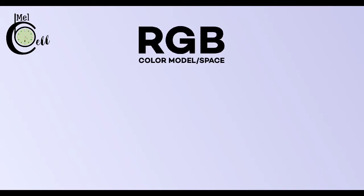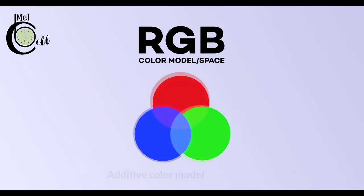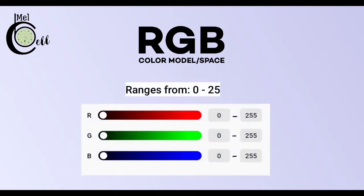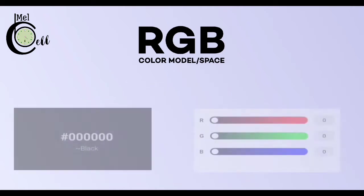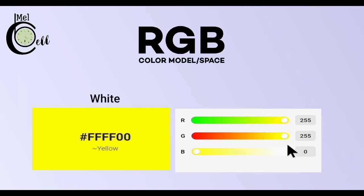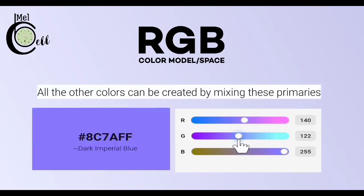RGB stands for Red, Green, and Blue. It's an additive color model, as mixed primaries make white. The intensity of these primaries ranges from 0 to 255. When the value of these primaries is 0, the color is black. When the value is maximum, the color is white. All other colors can be created by mixing these three primary colors.